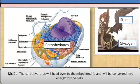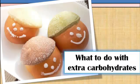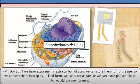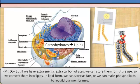The carbohydrates will head over to the mitochondria and will be converted into energy for the cells. But if we have extra energy — extra carbohydrates — we can store them for later use, so we can convert them into lipids. In lipid form, we can store them as fats, or we can make phospholipids to rebuild our membranes.